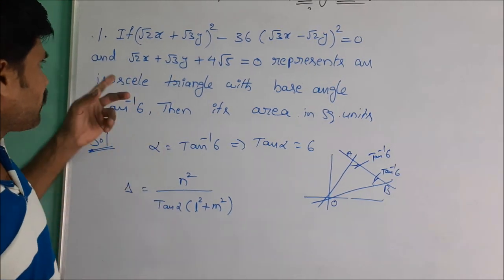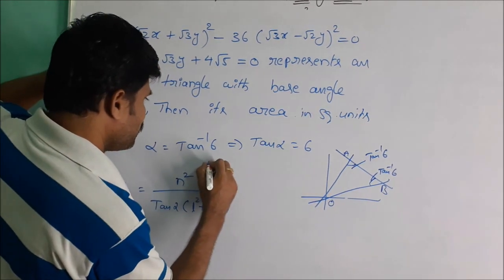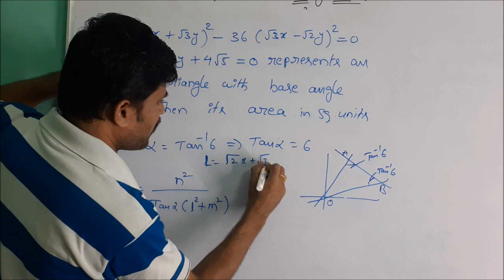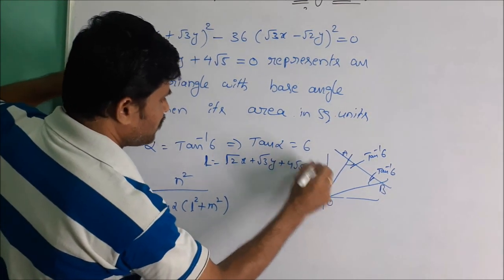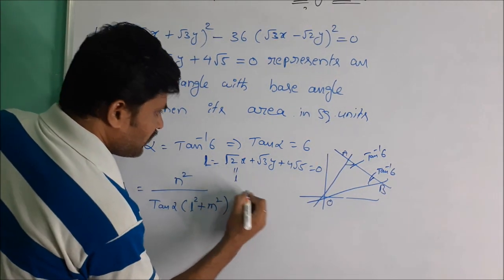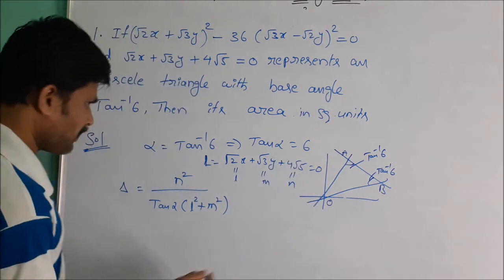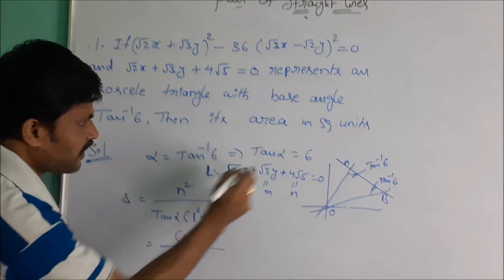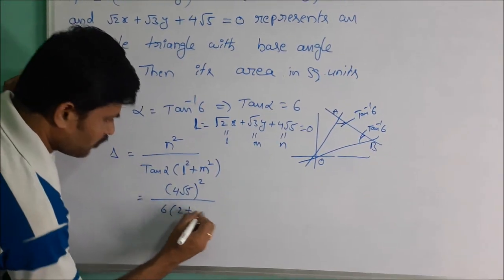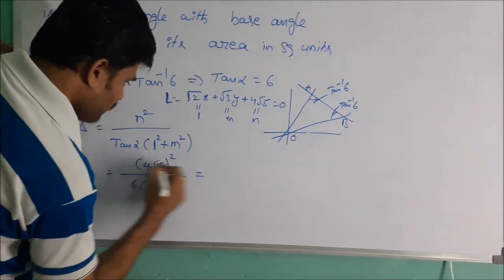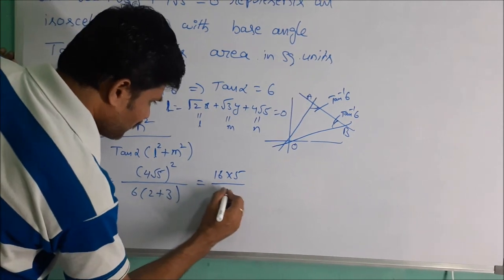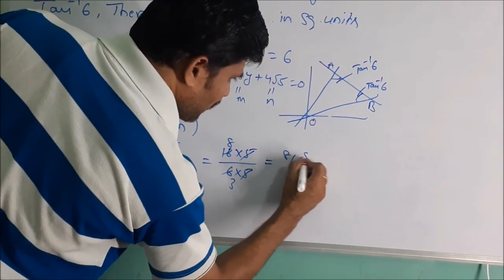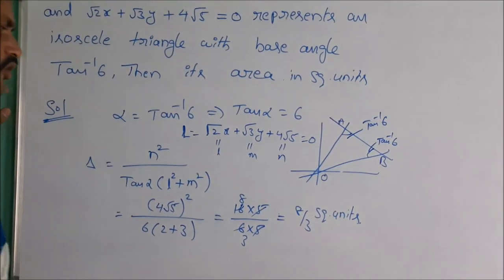Substituting values: n = 4√5, so n² = (4√5)² = 80; tan alpha = 6; l = √2, so l² = 2; m = √3, so m² = 3. Therefore Δ = 80 / [6 · (2 + 3)] = 80 / [6 · 5] = 80/30. The 5s cancel, giving 16/6 = 8/3. The answer is 8/3 square units.